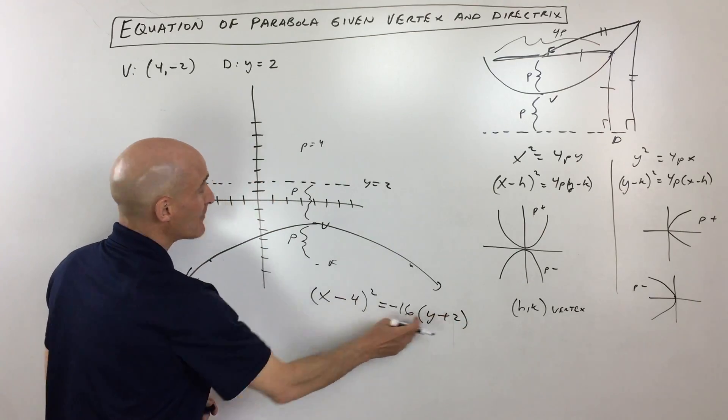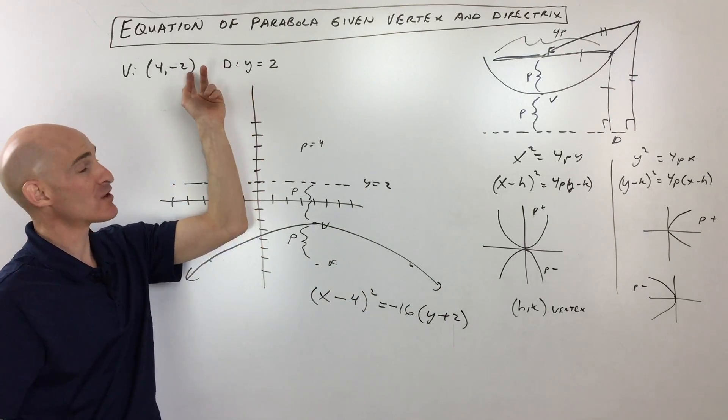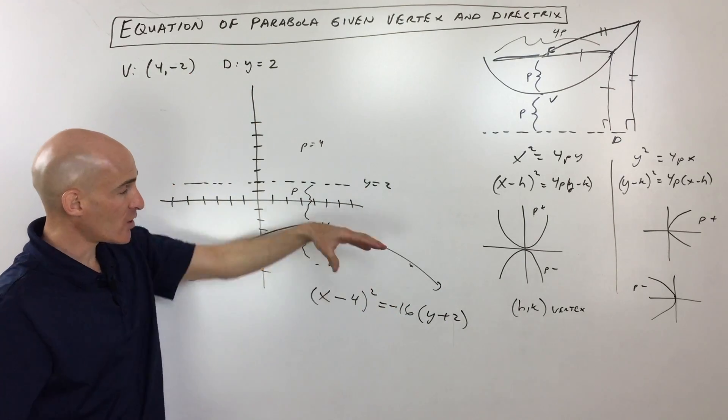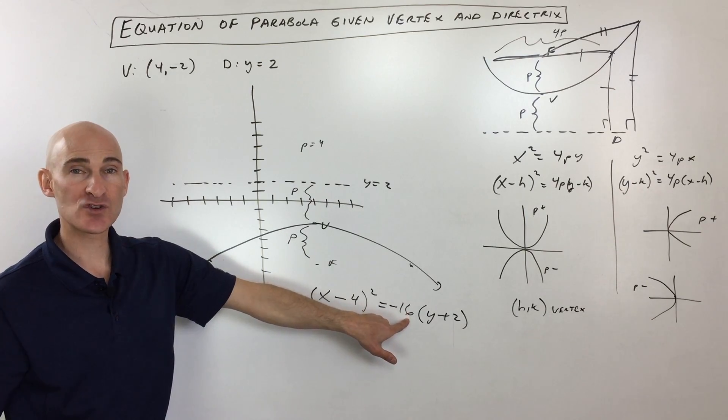And then we've got y plus 2. Now notice these are the opposite sign. It's x minus the x-coordinate of the vertex, y minus the y-coordinate of the vertex, and because it's x squared, it's opening down, and we have our 4 times p as our coefficient right here.